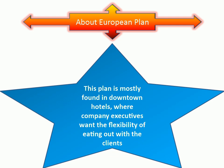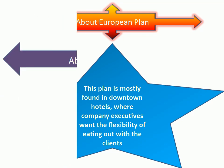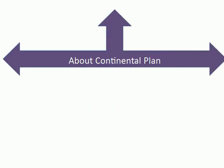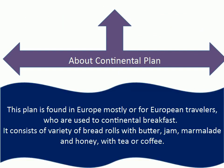About Continental Plan: This plan is found mostly in Europe, or for European travelers who are used to continental breakfast. It consists of a variety of bread rolls with butter, jam, marmalade, and honey, with tea or coffee.